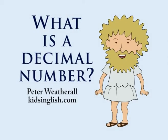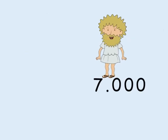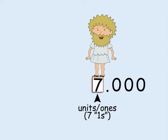What is a decimal number? A decimal number is a number with a decimal point. The position immediately to the left of the decimal point tells you how many single units, or ones, there are in a number.